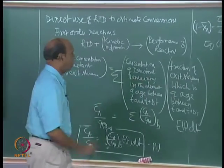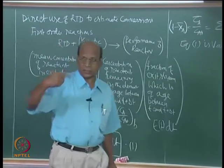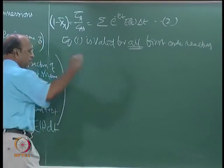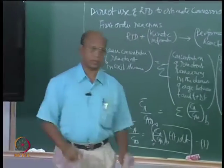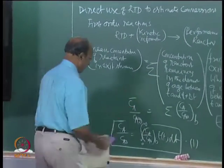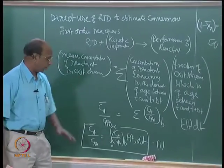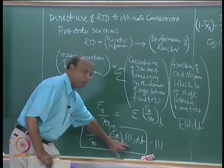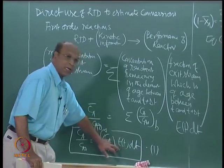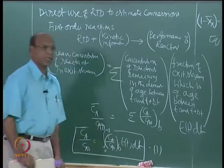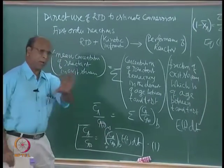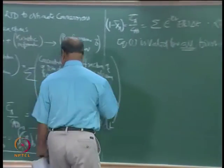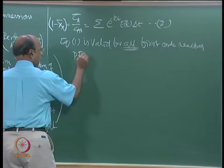Now let us discuss the next topic: what will happen for other than first-order reactions? Also, for ideal reactors, using C̄A/CA0 = ∫(CA/CA0)_batch · E(t) dt - for plug flow, what is E(t), and what is CA/CA0? For ideal PFR, what does this integral become?